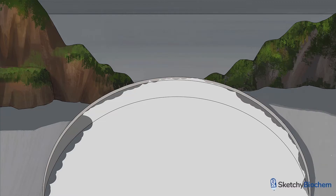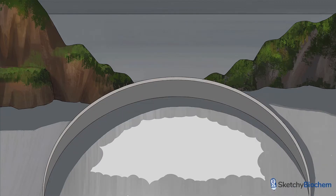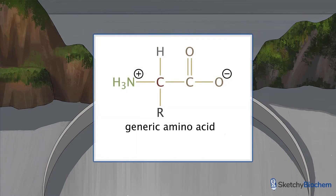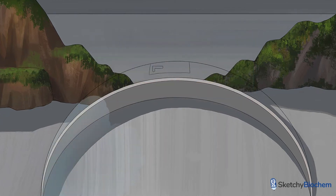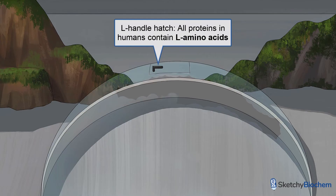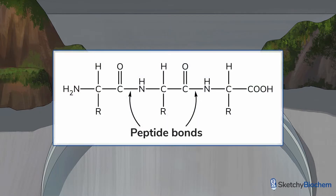Before we start putting our eyes on the goods, let's get our bearings first. Amino acids contain a carboxylic acid group, an amino group, and a unique side chain, all of which bind to the central alpha carbon. All amino acids in humans exist in the L-stereoisomer form, as opposed to the D-form. Recall from organic chemistry that stereoisomers have the same molecular formula and connectivity between atoms, but are oriented differently in three-dimensional space.